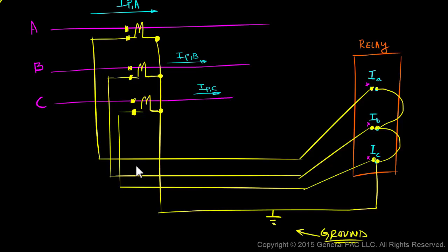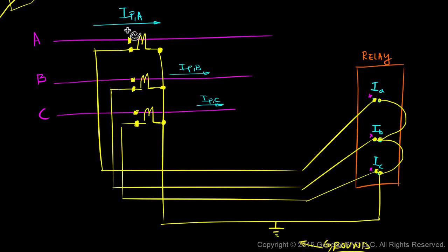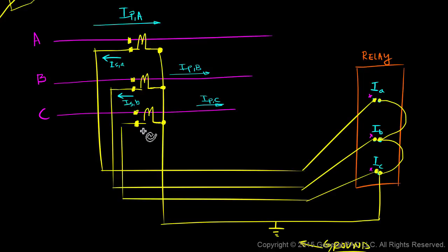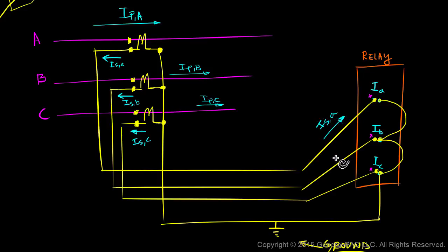In this module, let's focus on these currents. Since the primary phase A current flows into the dot on our primary side, the secondary phase A current must flow out of the dot on the secondary side. Similarly, secondary phase B current and secondary phase C current must also flow out of the dot on the secondary side. Secondary phase A current flows into the polarity-marked input terminal in our relay — same thing with phase B and phase C current. What comes out of the non-polarity side from our phase A input terminal is essentially phase A current.